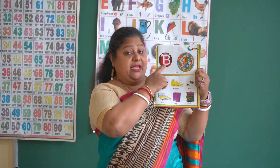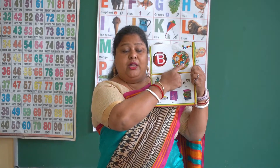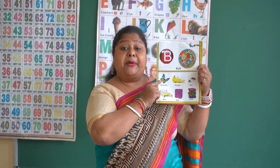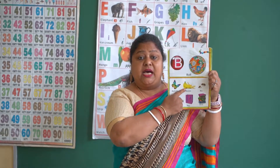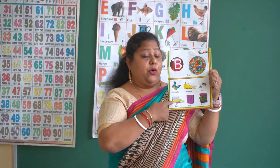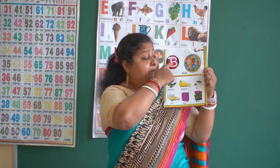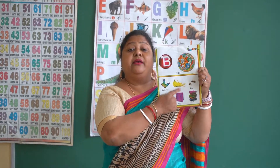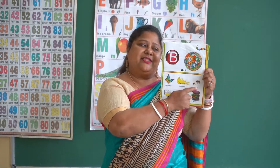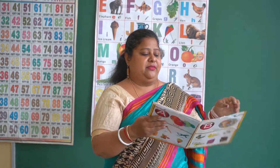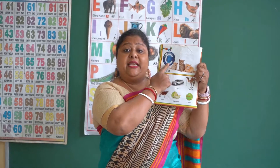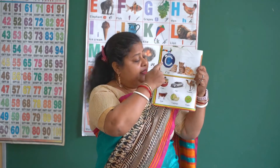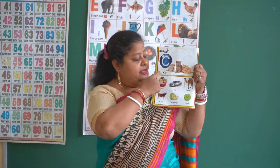Next page — B. B for ball, B for butterfly, B for banana, B for bee, B for bed, B for bag, B for books. Now turn the page.